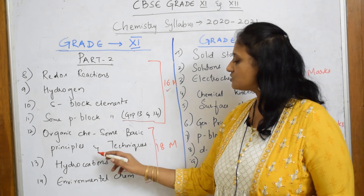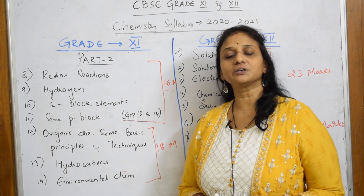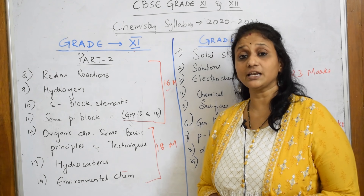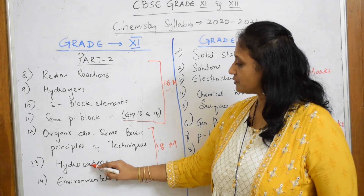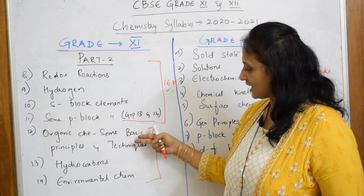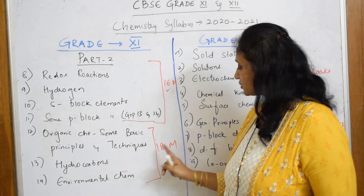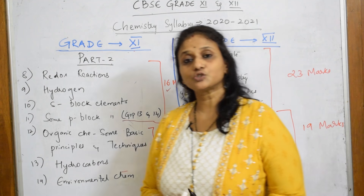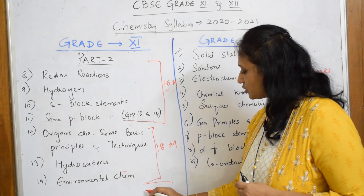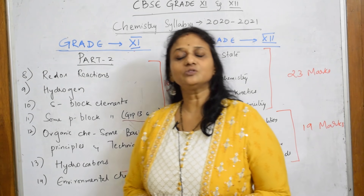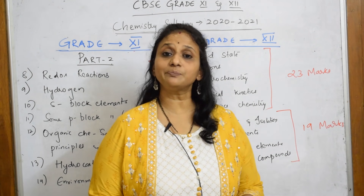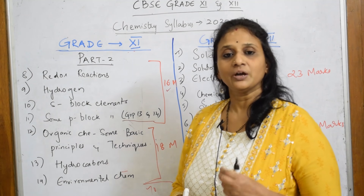Next comes Organic Chemistry, covering 'Some Basic Principles and Techniques,' including purification techniques and general organic chemistry. Then comes Hydrocarbons and Environmental Chemistry. These three chapters together come to 18 marks. So the total from the first chapter to the last chapter is 70 marks, with 30 marks for practicals. I'll be sharing a PDF file in the description.